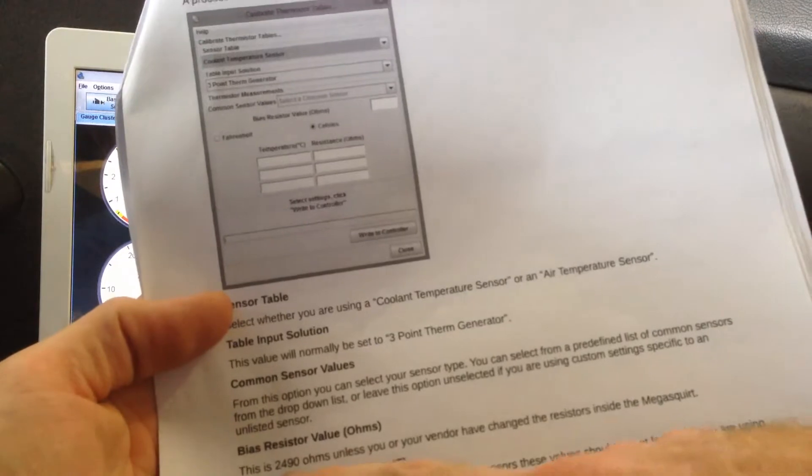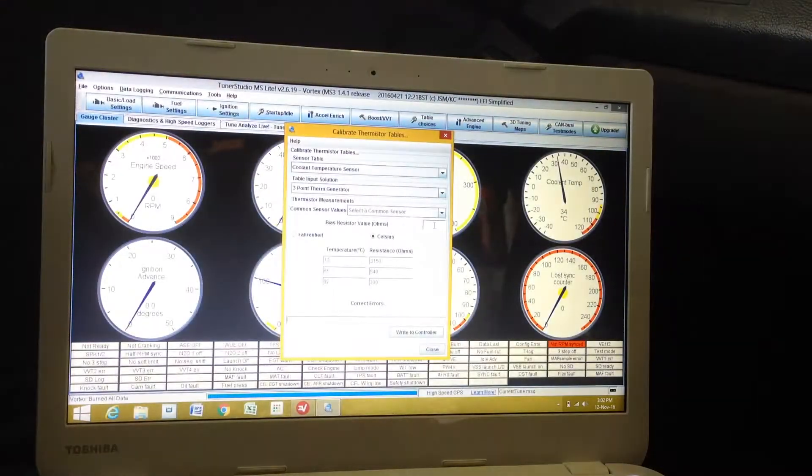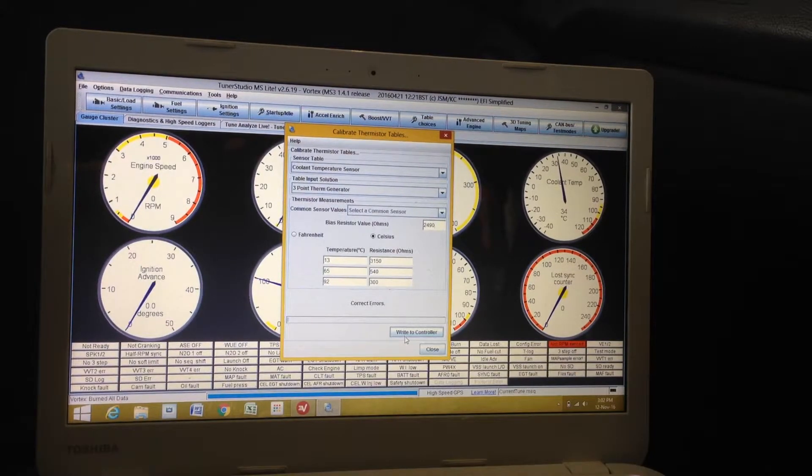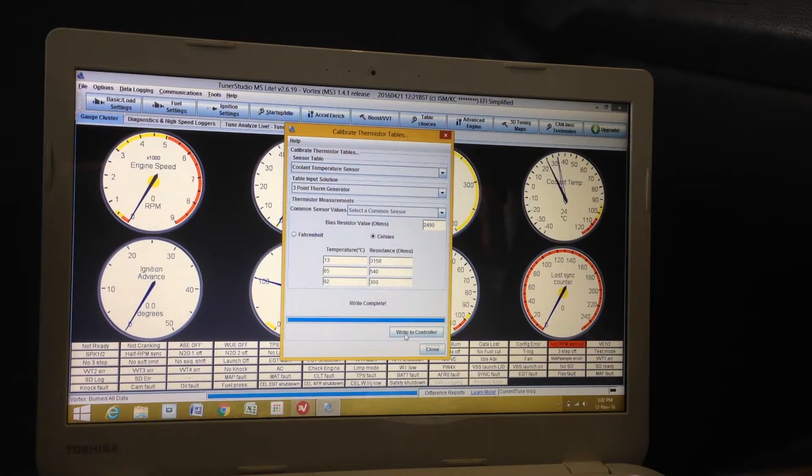Alright, so here we go. Bias resistor is 2,490 ohms. Alright. And close.